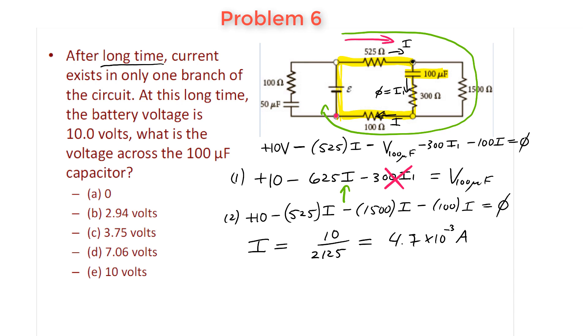So now I can go ahead and substitute into my expression for equation 1, and I'm left with that the voltage across this 100 microfarad capacitor is going to be less than 10. It's 10 minus 625 multiplied by my current, 4.7 times 10 to the minus 3. Punching in the numbers here, you should get 7.06 volts.